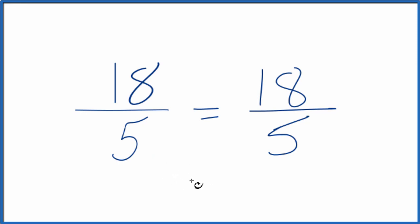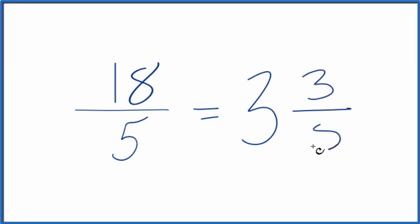We could write it as a mixed fraction, though. Why don't we try that? So 5 goes into 18, 3 times 5 is 15, so we'd have 3 left over. Bring the denominator across, and 18 fifths equals the mixed number 3 and 3 fifths.